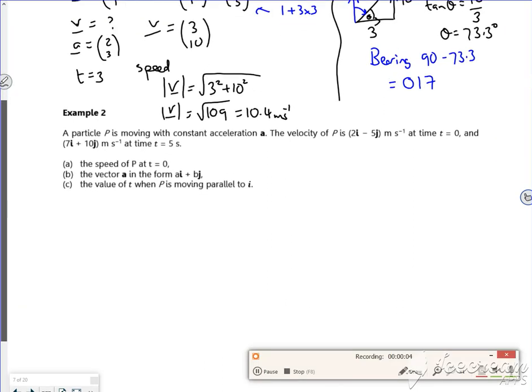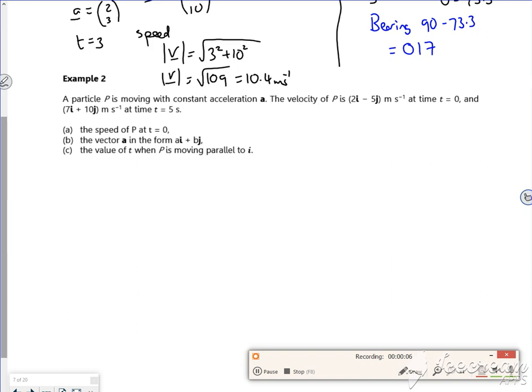Right then, so we're on the second example, example 2 for the second lesson. We've got a particle moving with constant acceleration a, we've got a velocity when time is 0, and we've got a velocity when time is 5, so we call that v when time is 5.